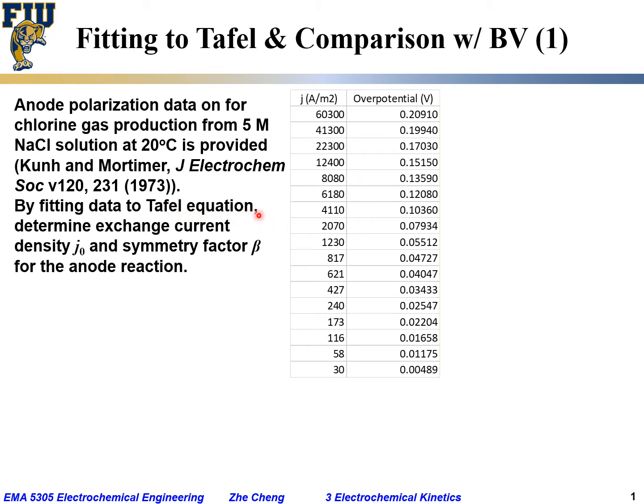Relatively large Tafel equation, quite often greater than 100 mV and before significant mass transport limitation. So fitting these polarization data, the current density overpotential data into Tafel equation, using overpotential range not too small. And determine the exchange current density j0 and the symmetry factor beta for the anode reaction.